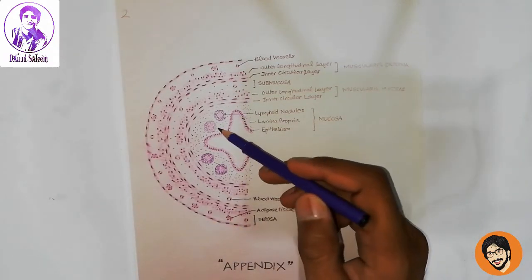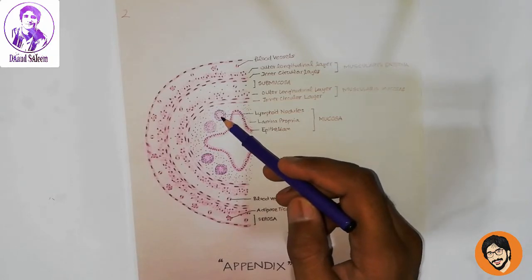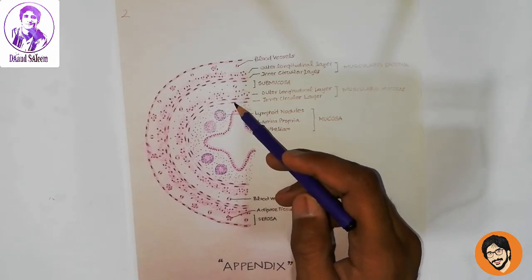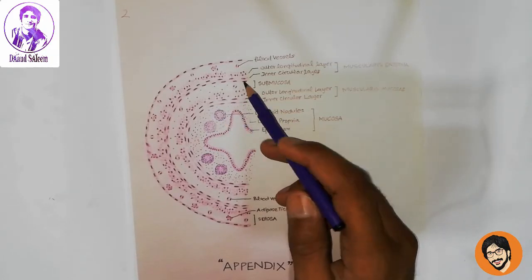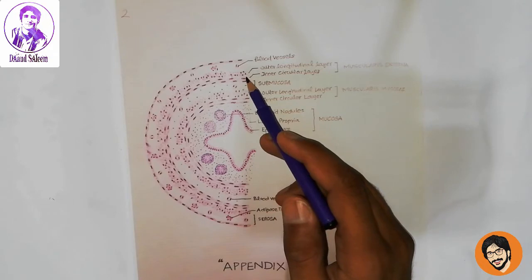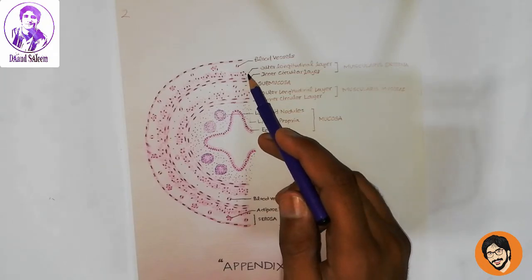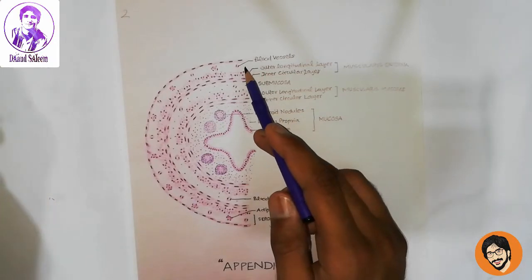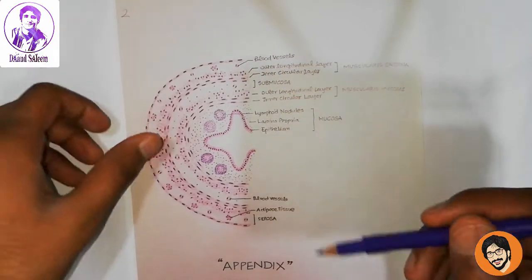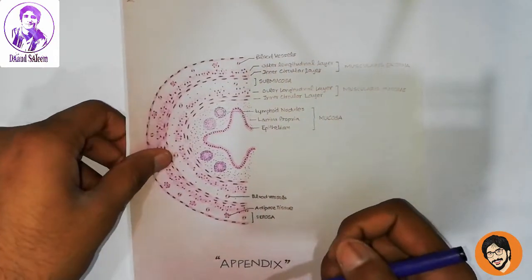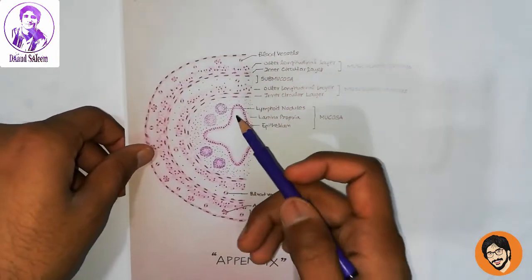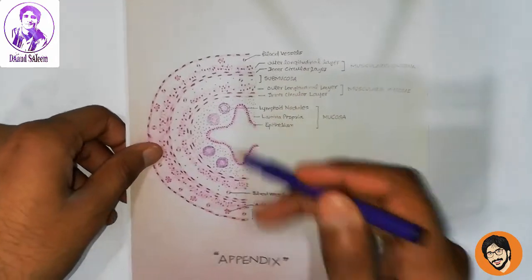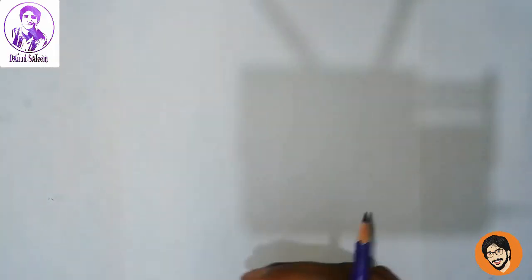The layers of the appendix include: epithelium, lamina propria, lymphatic nodules, and mucosa. Then muscularis externa with inner circular and outer longitudinal layers, and finally the serosa. So we are going to draw it like this.